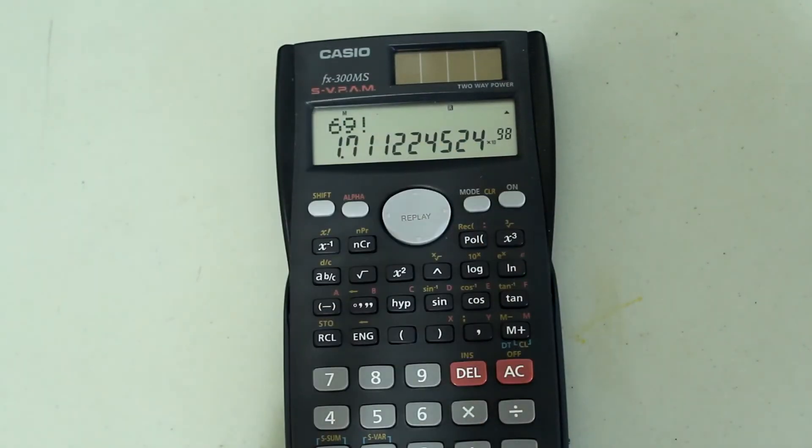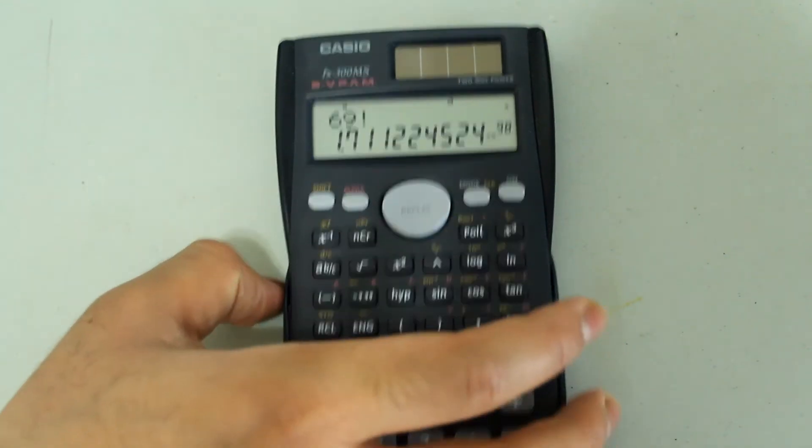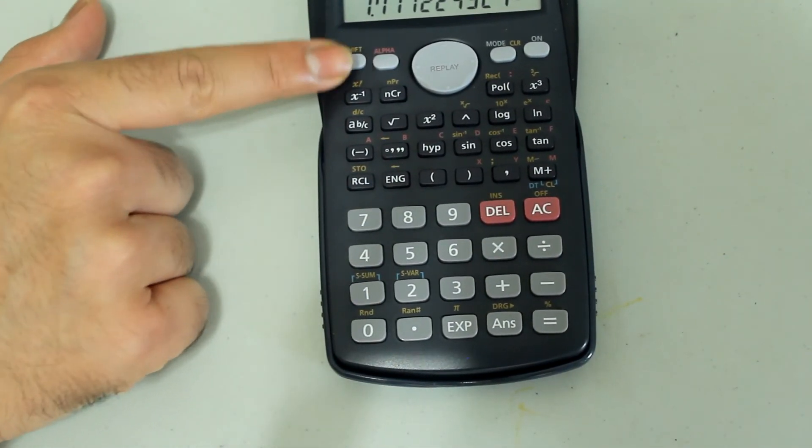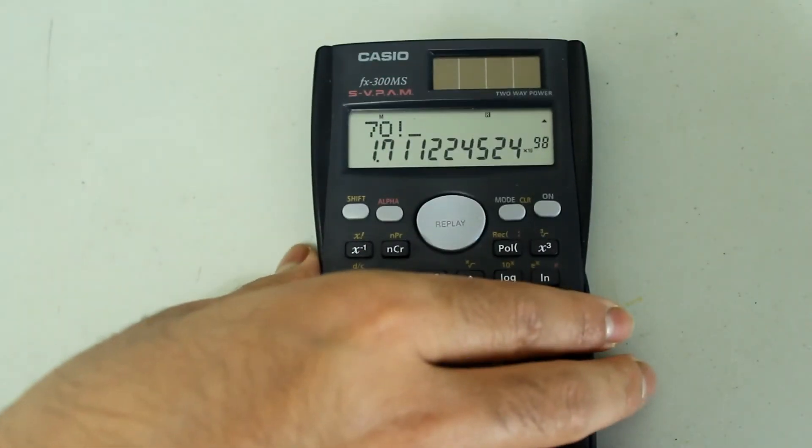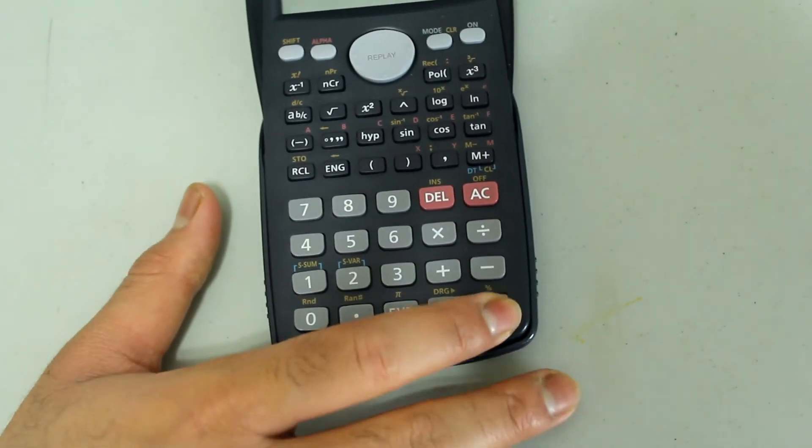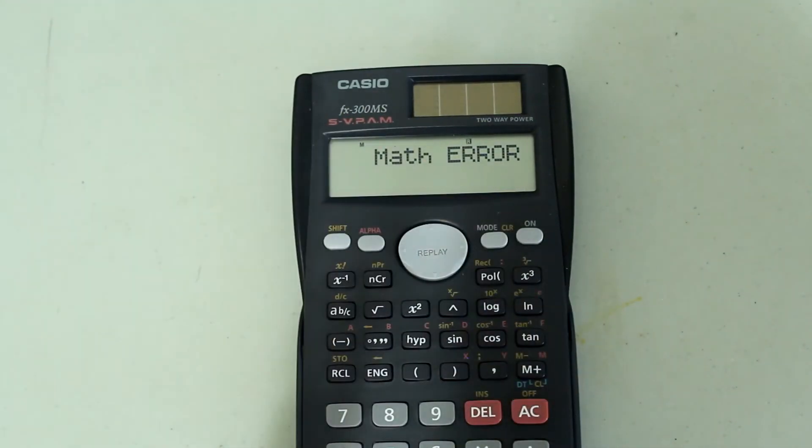But if I try and type in 70 and then press shift and the x to the negative 1 button to select the factorial option and I press equals, I get an error. So that's the cutoff.